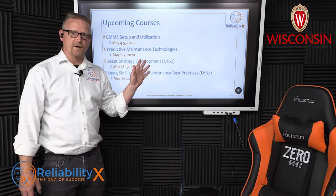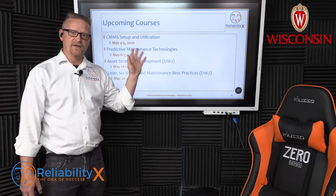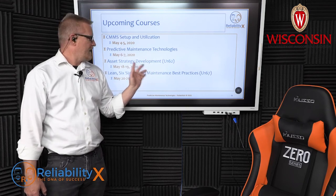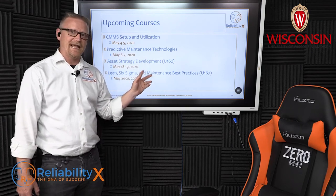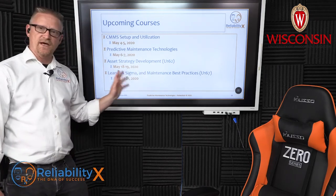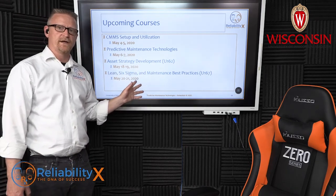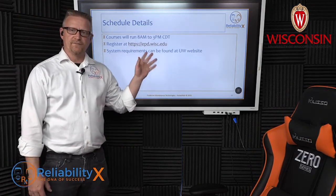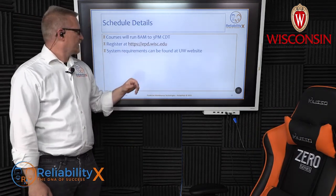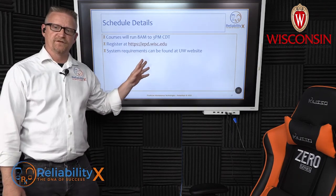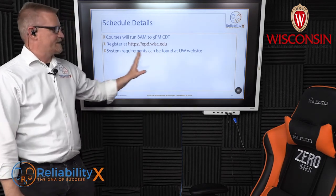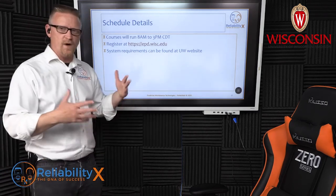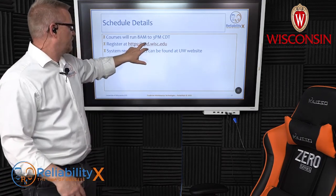Registrations are now available for our upcoming classes: CMS Setup and Utilization, May 4th and 5th; Predictive Maintenance Technologies, May 6th and 7th; Asset Strategy Development, May 18th and 19th; and Lean Six Sigma and Maintenance Best Practices, May 20th and 21st. Courses will run 8 a.m. to 3 p.m. Central Time. Registration is available at the Engineering Professional Development website, as well as system requirements for using GoToWebinar.